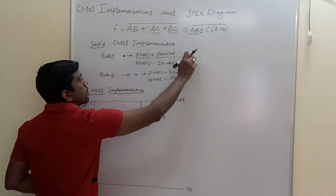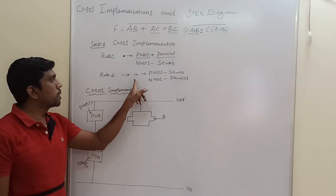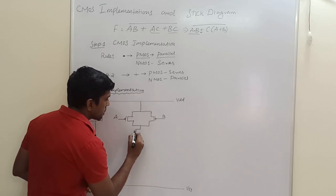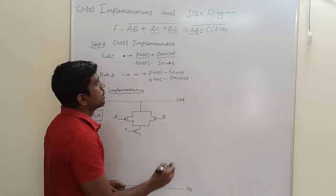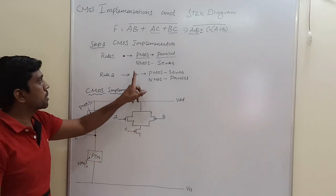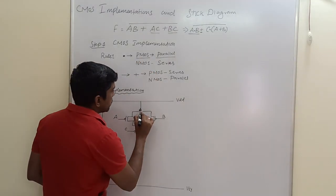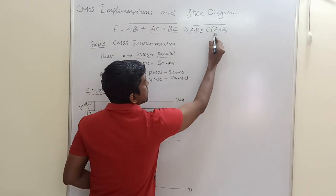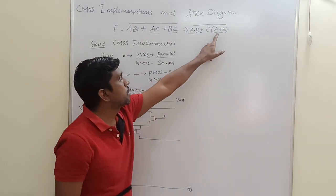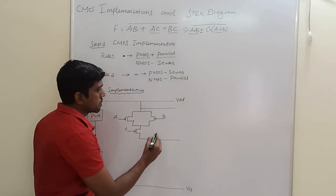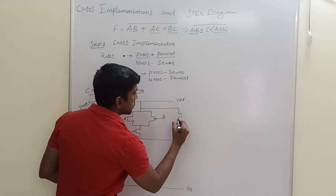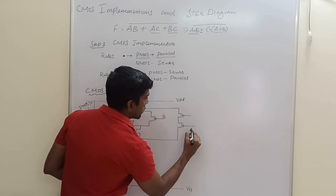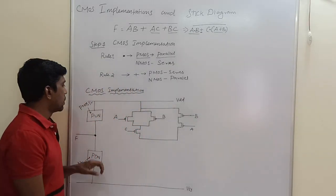Next, the plus operator is present, so P-MOS transistor C connects in series — this is PUN number 2. Then, for the dot operator, P-MOS transistors connect in parallel between the two terms. For the next term A plus B, since the plus operator is present, P-MOS transistors connect in series. These two transistors A and B are connected in series. The pull-up network structure is now complete, and one line connects to the output F.